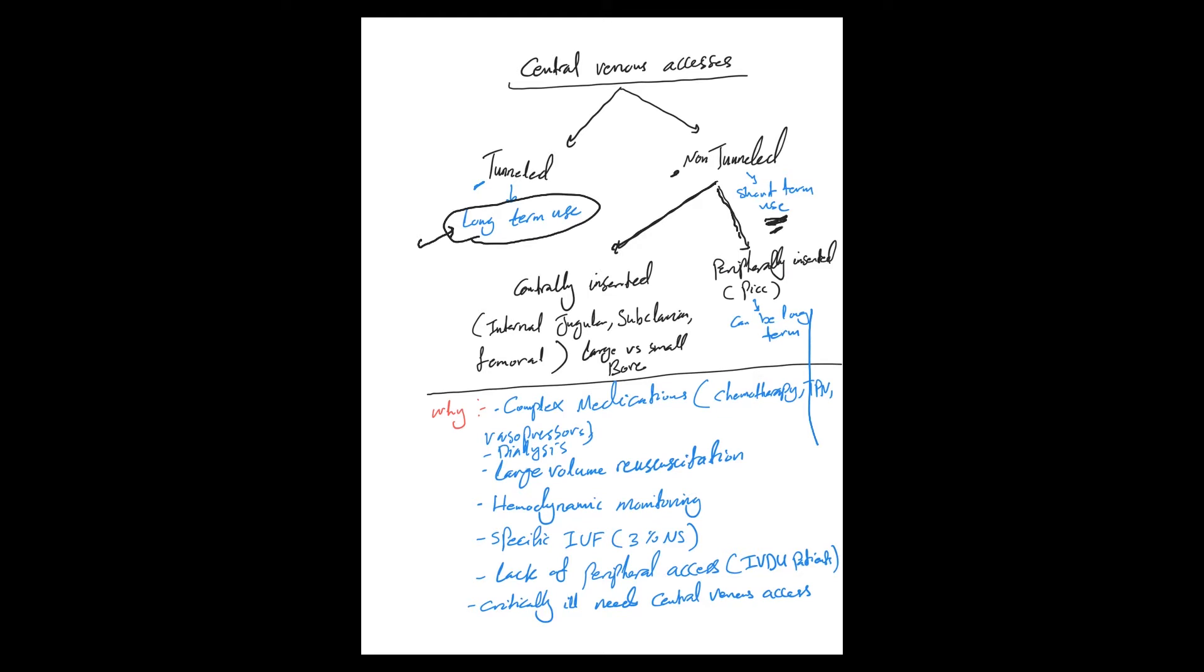Non-tunneled catheters are either centrally inserted or peripherally inserted. Centrally inserted includes internal jugular vein central line, subclavian vein central line, and femoral vein central lines. These can be small or large bore catheters.